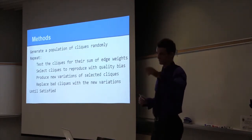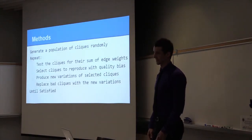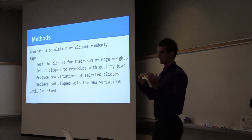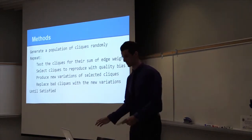We could talk about this after in the meeting if you want to go into the details of evolutionary computation, but then pretty much using Darwin's theory of evolution as how it would produce new variations of selected cliques, replace bad cliques with new variations, and then until the average quality and the highest quality of our cliques plateau scale and period of time, that's our stopping criteria.